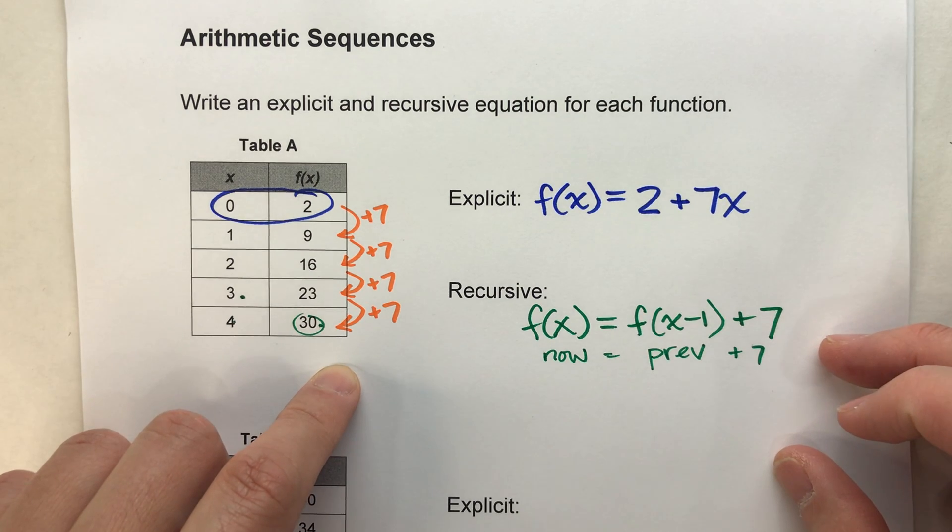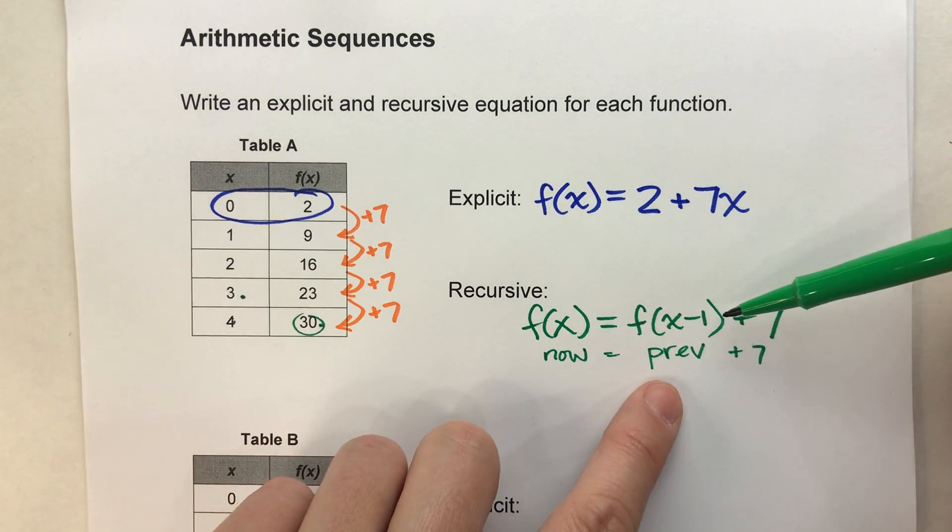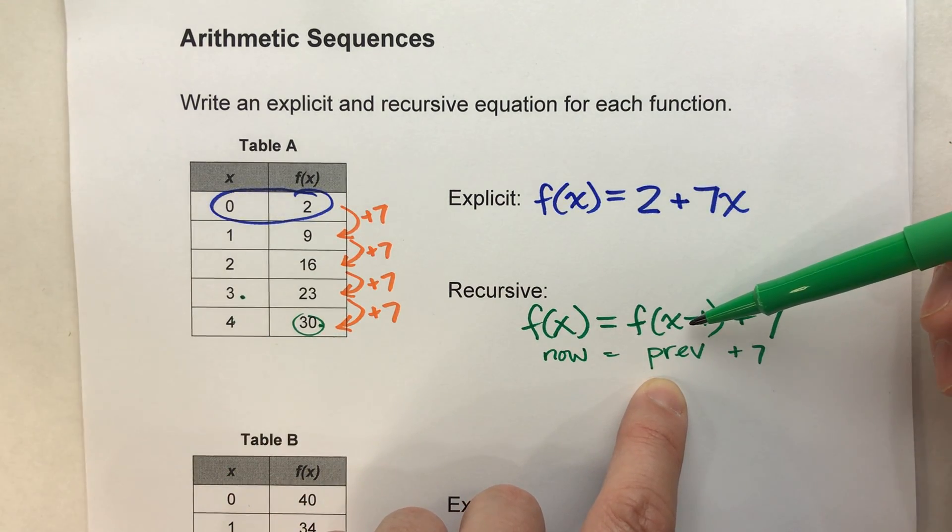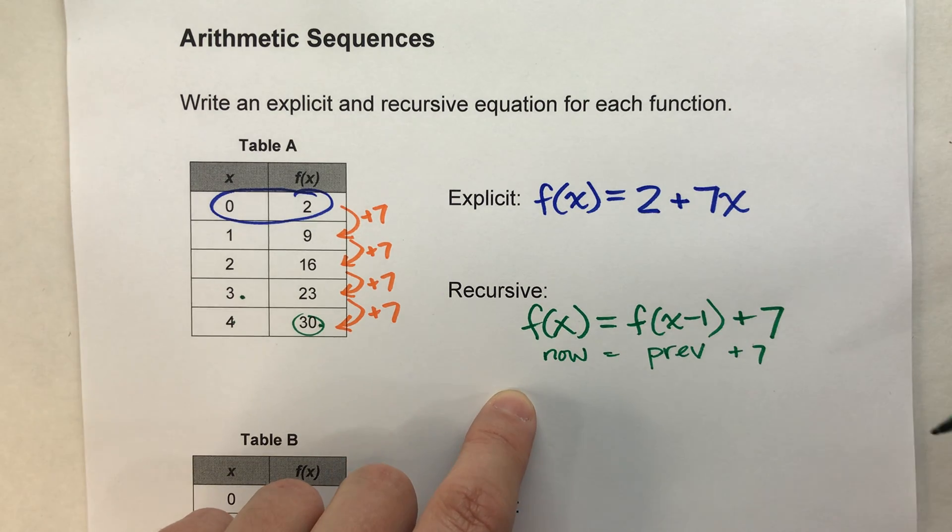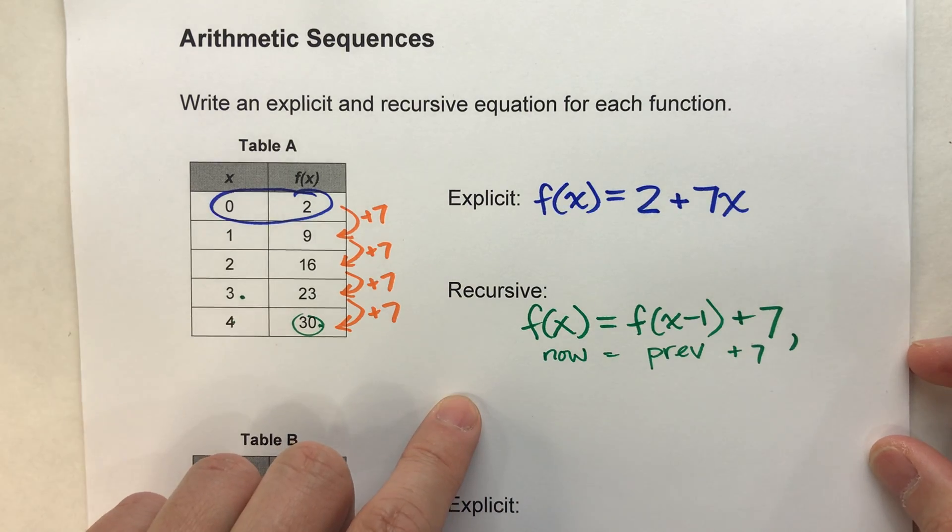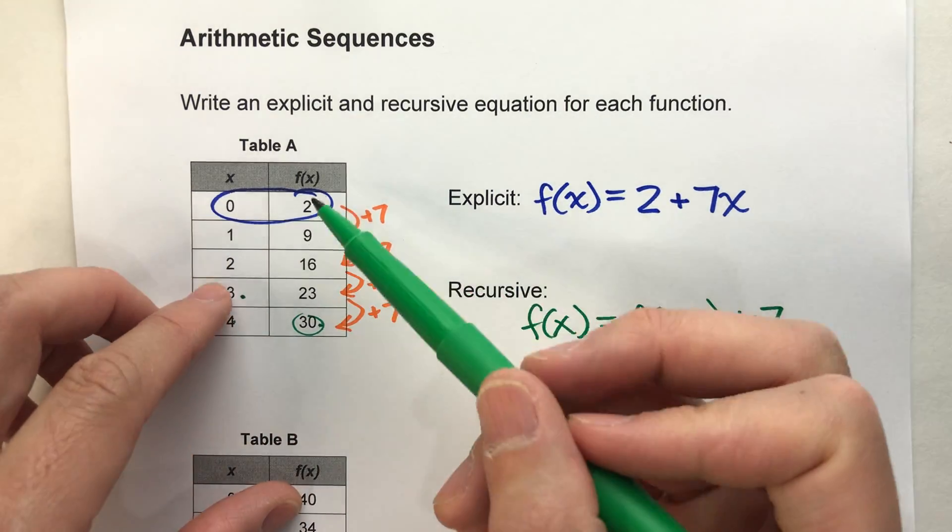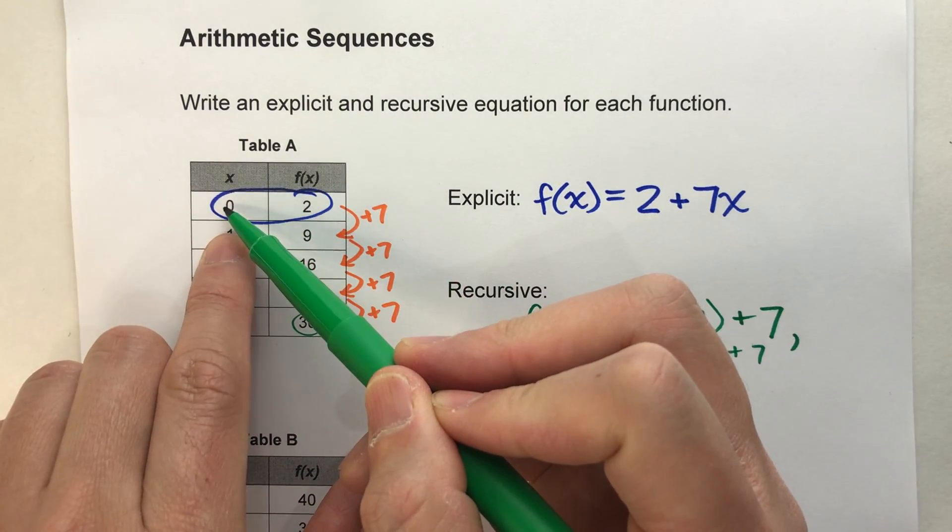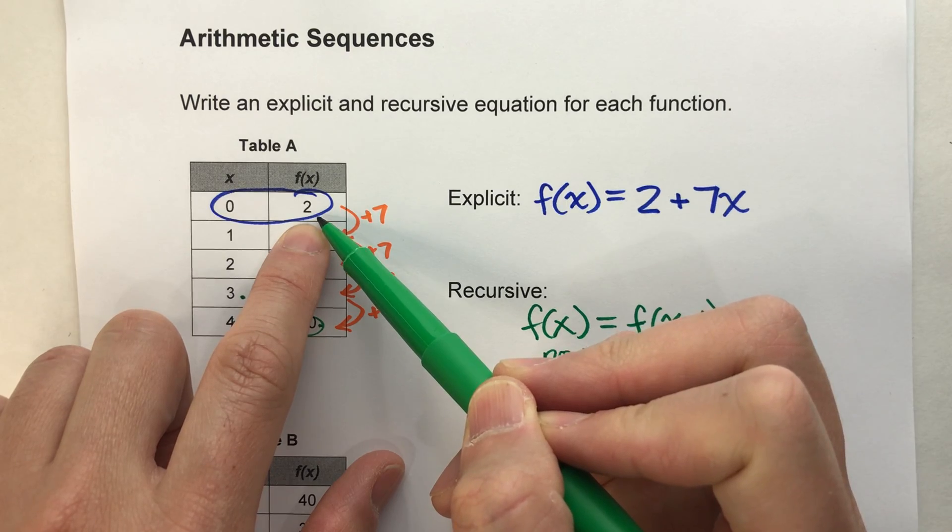Now there's one more thing we need to know though, because this is all great as long as we know the previous value. But we still need to know what number did it start at. So we're going to have to put a comma there and include one more bit of information.